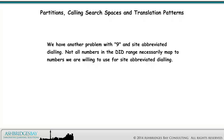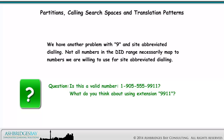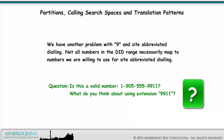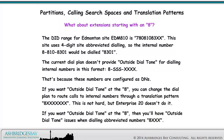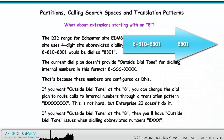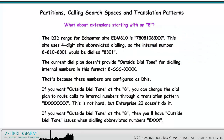We have another problem with 9 and site abbreviated dialing. Not all numbers in the DID range necessarily map to numbers we are willing to use for site abbreviated dialing. Is this a valid number? 1-905-555-9911. And what do you think about using extension 9911? What about extensions starting with an 8? The DID range for Edmonton site EDM810 is 780-810-83XX. This site uses four-digit site abbreviated dialing, so the internal number 8-810-8301 would be dialed 8301. The current dial plan doesn't provide outside dial tone for dialing internal numbers in the format 8-SSS-XXXX, because these numbers are configured as DNs.